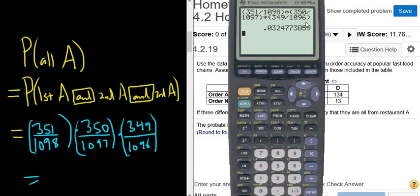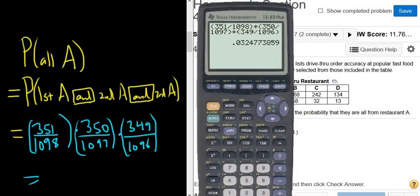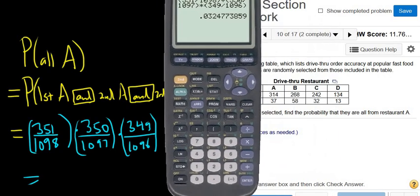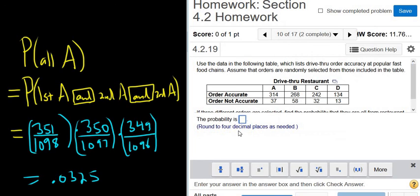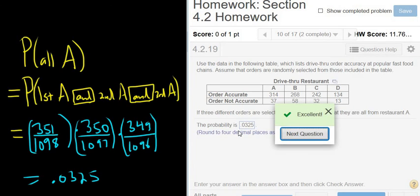So we get 0.0325. It wants four decimals, right? Four decimals. So 0.0325. Let's try it. 0.0325. Type it in. 0.0325. All right. That's it. Hope that made sense.